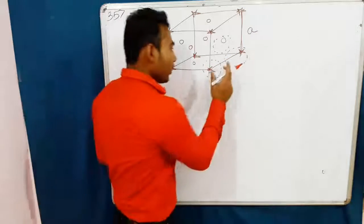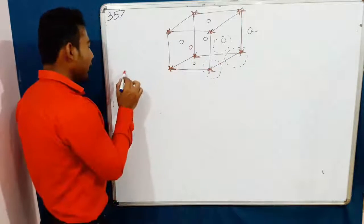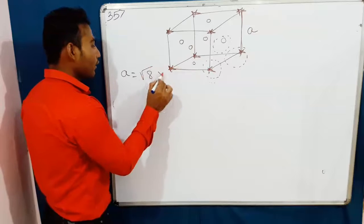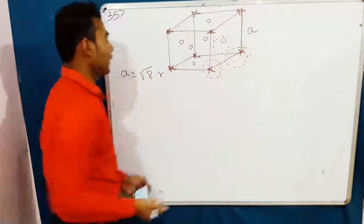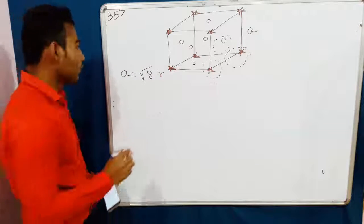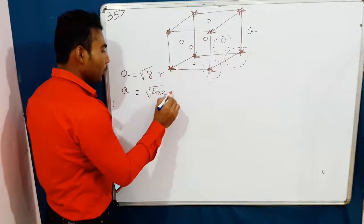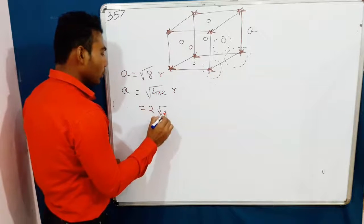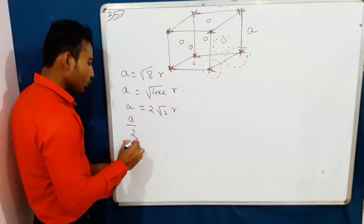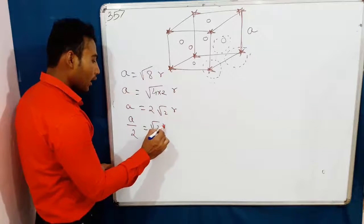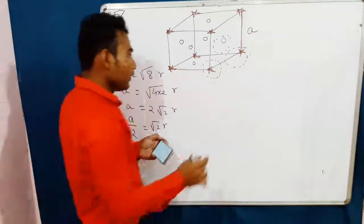If the radius is R, what do you know about FCC? A is equal to under root 8 R, so the edge length equals root 8 into the atomic radius. Therefore, A equals root 4 into root 2 R, giving us A by 2 equals root 2 R, so R equals A divided by 2 root 2.